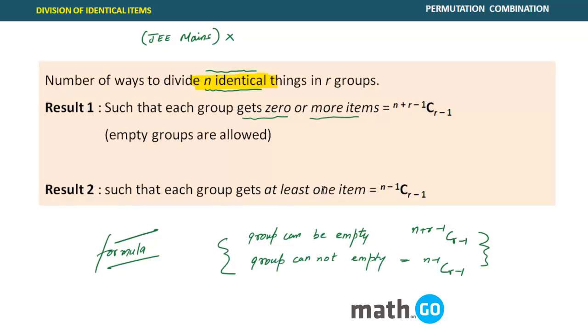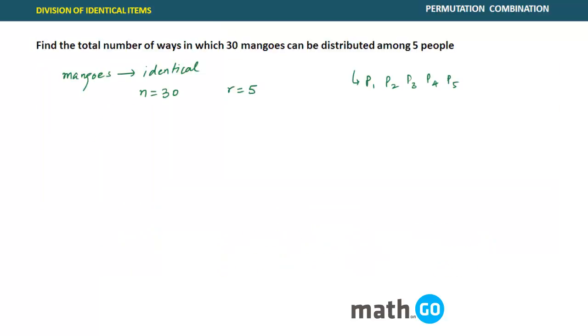Second one is for at least one to each item or each group. No, it is not given here. So we will use the formula n plus r minus 1, C r minus 1. So how do we apply this is 30 plus 5 minus 1, C 5 minus 1. This is 34 C 4. This is the answer we are looking for. And this is all you solve these kind of questions.